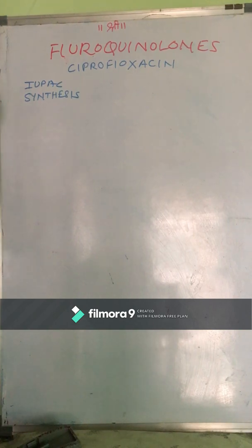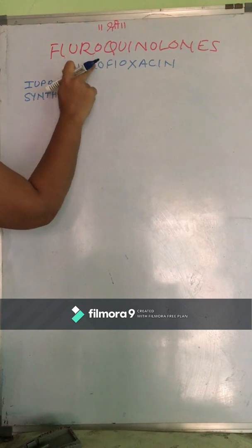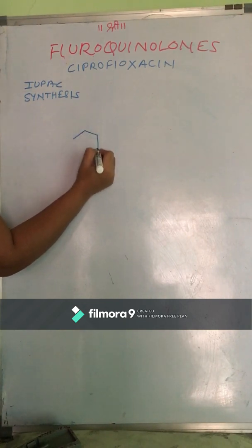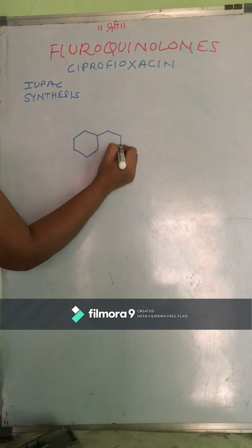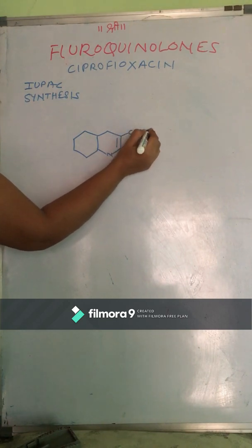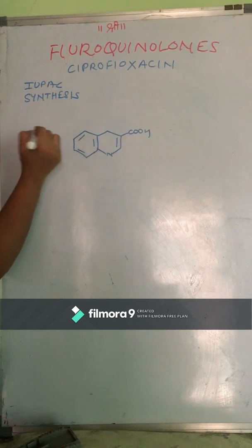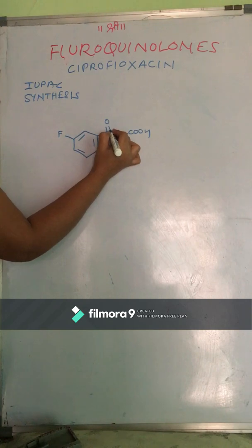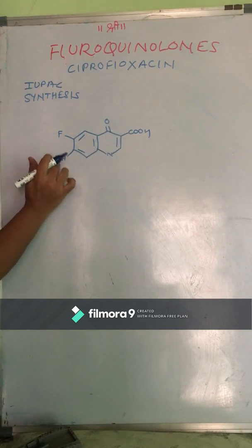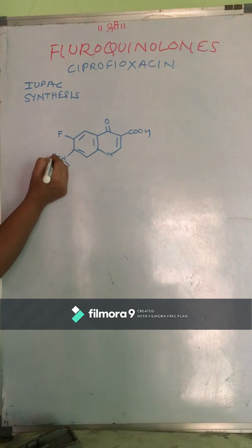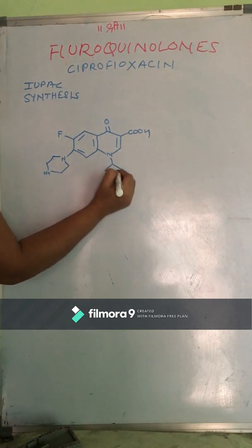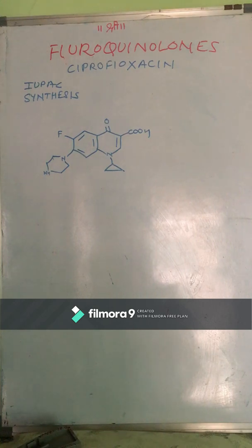Let's start with the structure first. Ciprofloxacin is a drug of the fluoroquinolones class, so fluoroquinolones have a general structure of quinoline-3-carboxylic acid. This is the structure of ciprofloxacin.